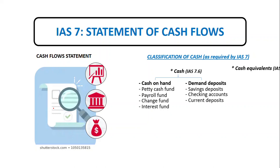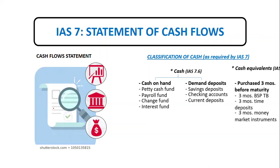Cash equivalents are short-term, highly liquid investments that are readily convertible to a known amount of cash and subject to an insignificant risk of change in value. Per IAS 7 paragraph 7, an investment normally qualifies as a cash equivalent only when it has a short maturity of three months or less from the date of acquisition. Examples include three-month BSP treasury bills, three-month time deposits, or money market instruments purchased three months before the maturity date.